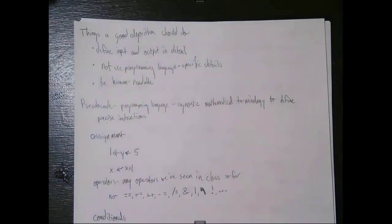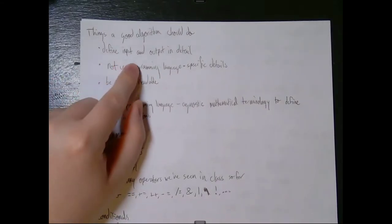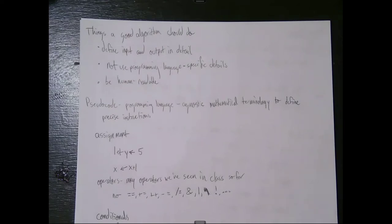Now, just like when we talked about proofs, I'm going to differentiate things an algorithm must do from things a good algorithm should do. A good algorithm should define input and output in detail — what does the input look like, what does the output look like, what properties do they have? The more detail you can go into, the easier it will be for someone reading your algorithm to understand what's going on and to build code from it.